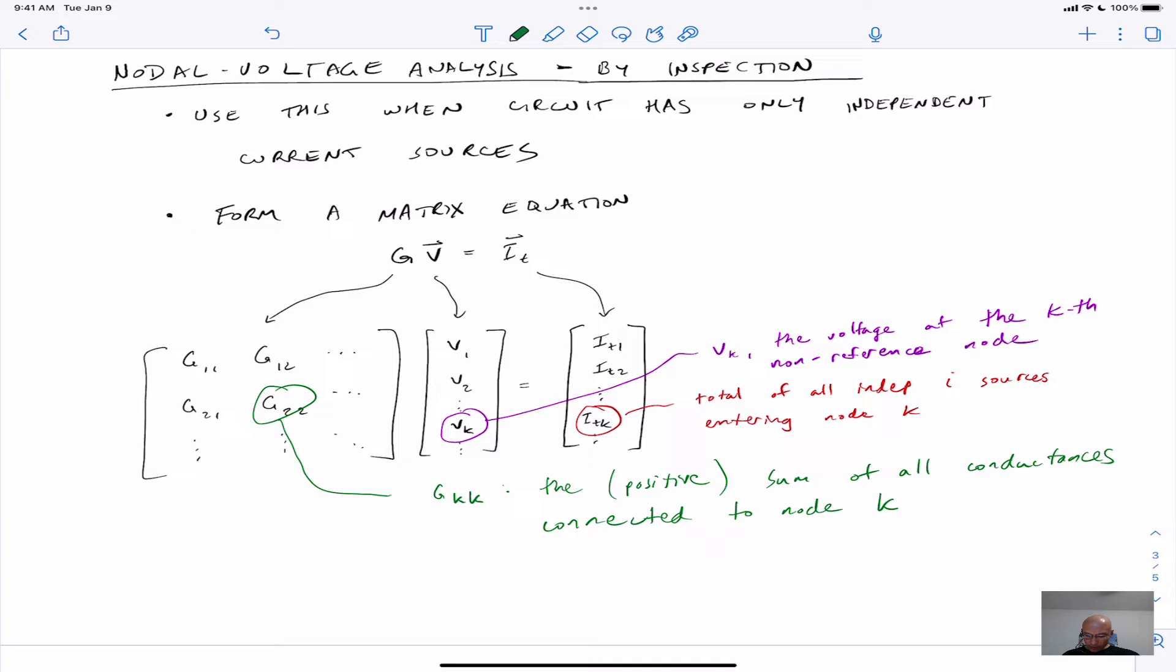For the off-diagonal elements, we'll write them as G_J,K. G_J,K will happen to be equal to G_K,J. And what are these? Well, these are the negative of all the conductances connecting nodes J and K. So that's how we'll get all of these elements. Of course, we will solve for V, so the solution is like this.